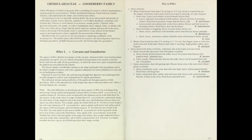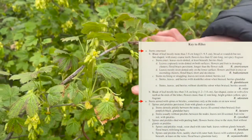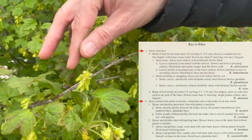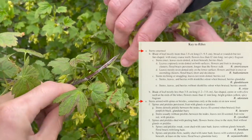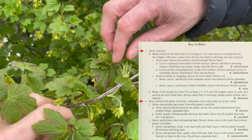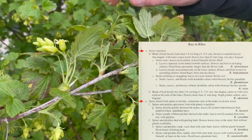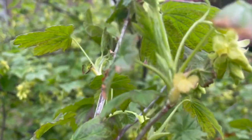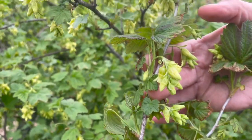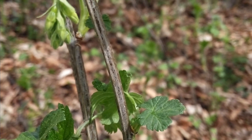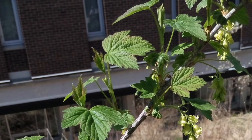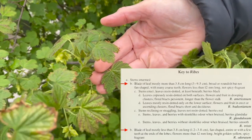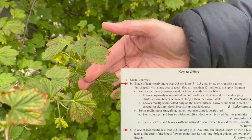Sometimes after completing one of the first four keys, the result will be a genus. This will bring you to a key to that genus, where you will have to go through the key further to get down to species. The first option — A: stems unarmed, or A: stems armed with spines or bristles, sometimes only at the nodes or on new wood. We will look again and see that these stems are unarmed and have no spines or bristles.